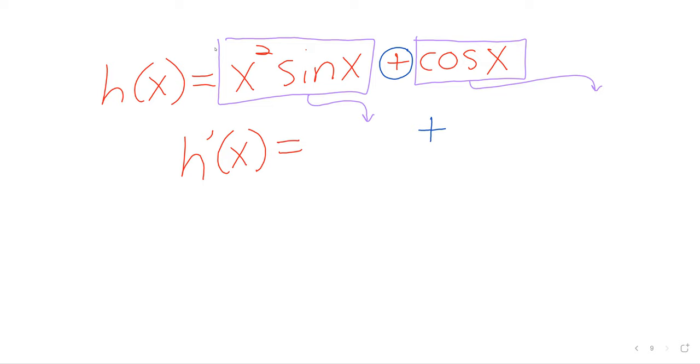One of these individual derivatives is hopefully pretty straightforward. If you haven't memorized the derivative of the cosine by now, you need to make that a priority. The derivative of the cosine is the negative sine. So that doesn't require anything special.